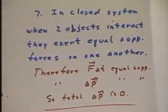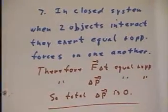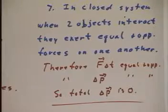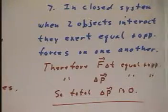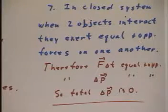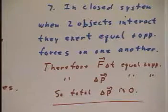For a minute, we're going to jump back to number seven on explanations, which we haven't covered, and say that in a closed system... Okay, the question here is how do we get conservation of momentum from Newton's third law.